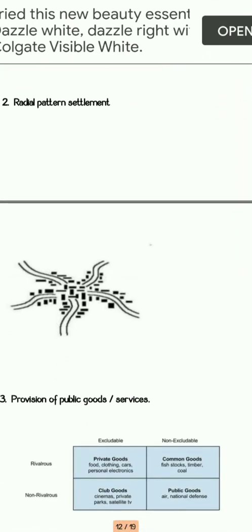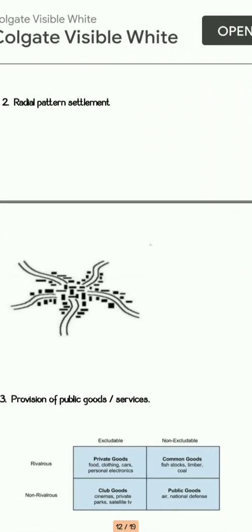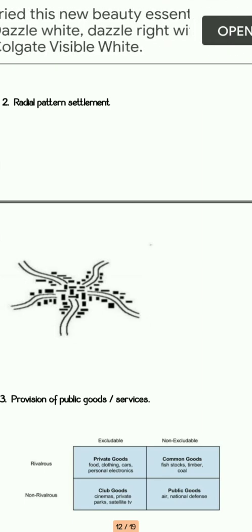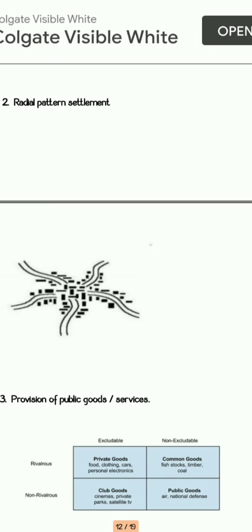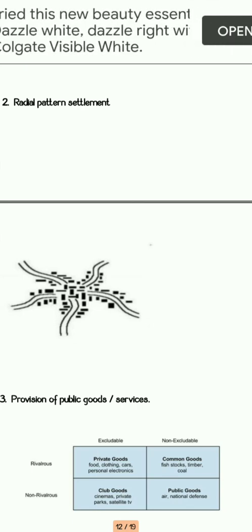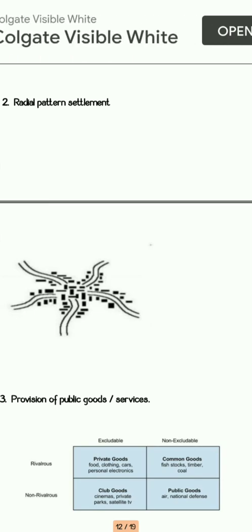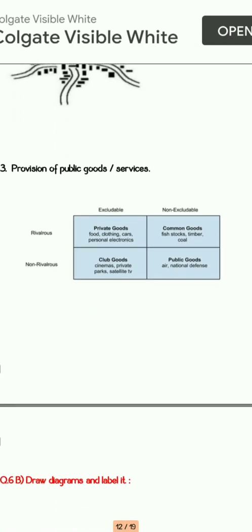Next is radial pattern settlement. For this diagram, you need to take one nucleus in the centre and draw all roads outward from that central point. This outward direction from a central point is your radial type of settlement.